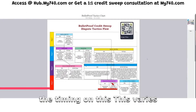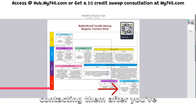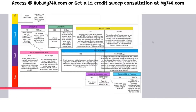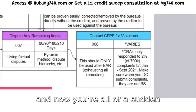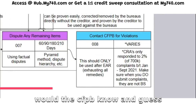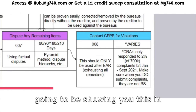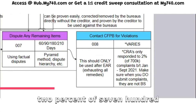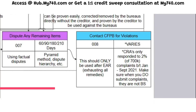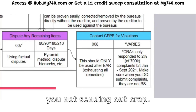The timing on this varies, but you should only be contacting the CFPB after you've exhausted all remedies. That does not mean you send one round of disputes and now you're suddenly with the CFPB. There's an article I'll show you in the next video: the bureaus only responded to 2% of 700,000 complaints between January and September of 2021. So make sure when you do submit your complaints, you're not sending out garbage.